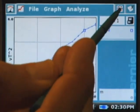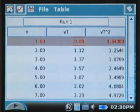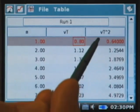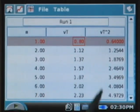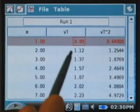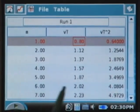And let me go back to my data table. And there, I've got a column that is labeled the square of the terminal velocity. And each of these values is simply the square of the contents of this middle column.